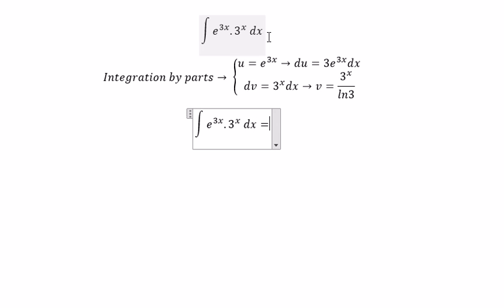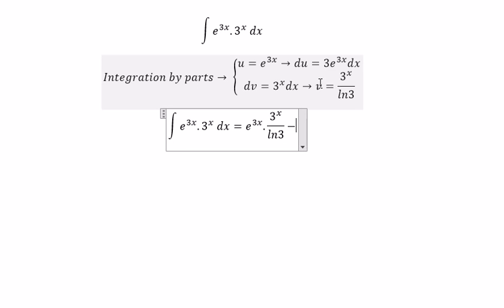So we have u multiplied by v, and we have negative du multiplied by v.